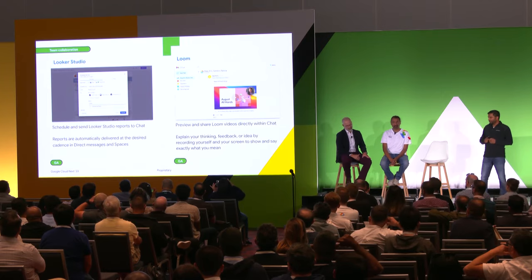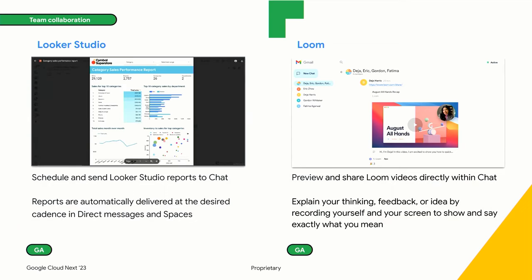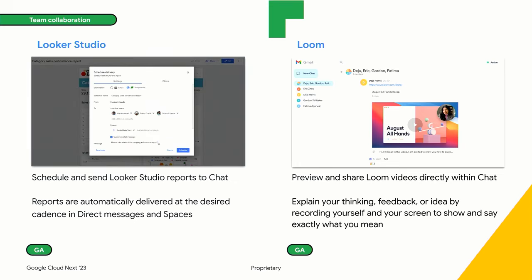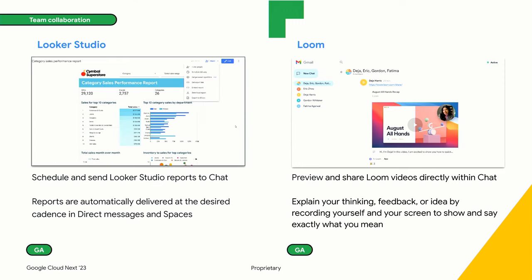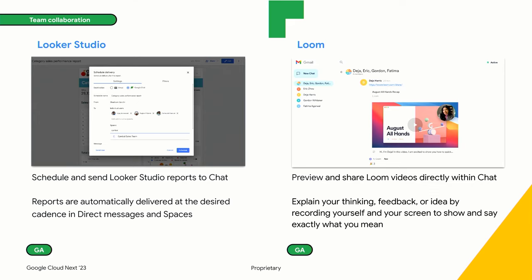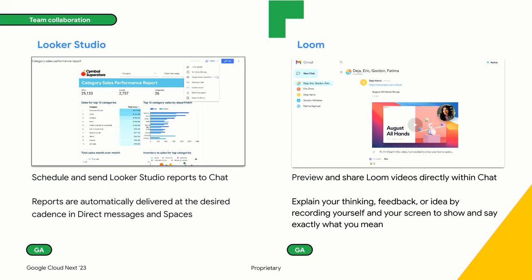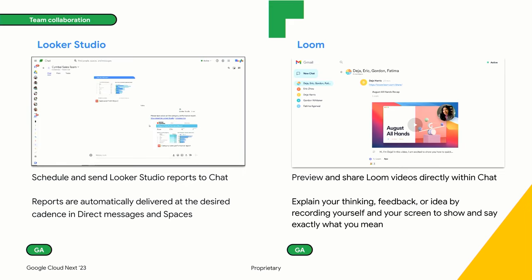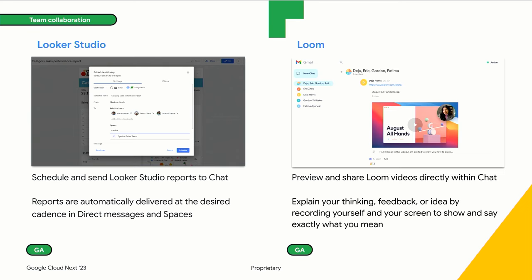Let's go through some examples of partners building great chat apps, because it's when you all build these solutions and use cases that the magic happens for our users. Starting with collaboration use cases, Looker have built a great integration with chat that allows you to schedule and send reports directly to the right chat spaces. Next up is collaboration partner Llu, who allow you to bring context-rich async video messages straight into the chat stream so that users can collaborate in a true hybrid fashion across time zones and working hours. These integrations are available now.